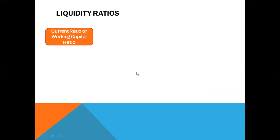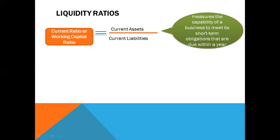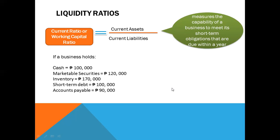Now let's go to liquidity ratios. The first liquidity ratio is the current ratio, or working capital ratio, which is equal to current assets over current liabilities. It measures the capability of a business to meet its short-term obligations that are due within a year. For example, if a business holds cash of $100,000,